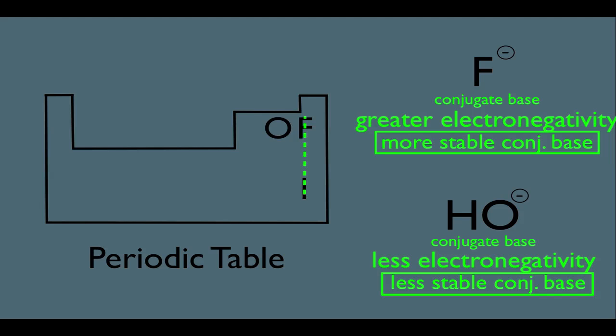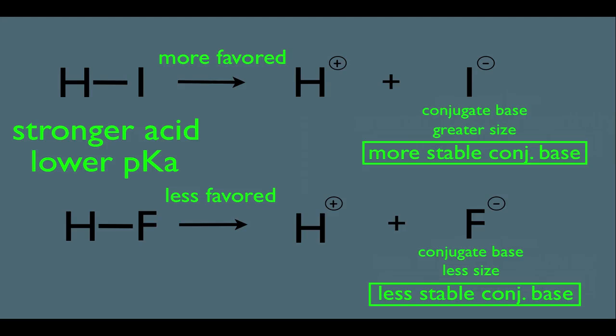So that means if you're going to compare the conjugate base of I- to F-, you can't use the electronegativity rule because they have different sizes. Instead, simply you will use the size rule. So that's why, in this case, HI is the stronger acid with the lower pKa.